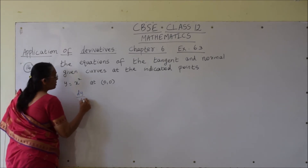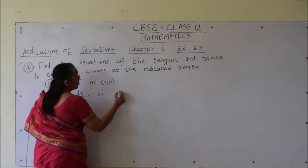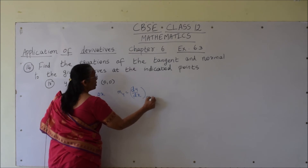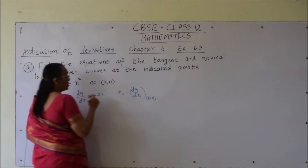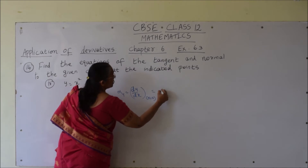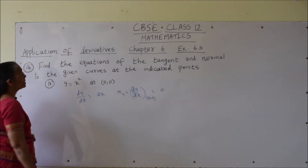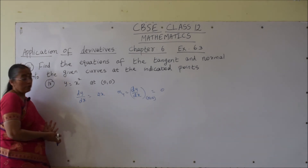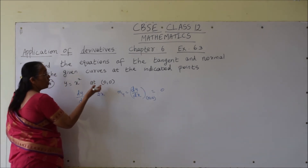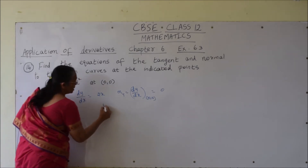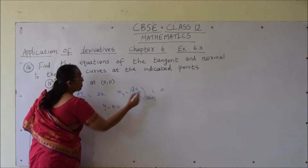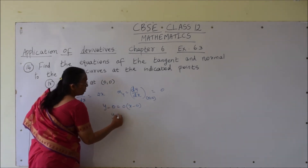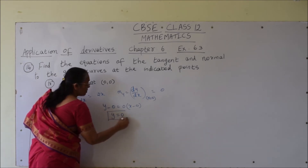Differentiating, dy by dx is 2x. Now the slope of tangent is dy by dx of the curve at the point (0, 0). Substituting 0 into x we get 0. So slope of the tangent is 0. The equation of tangent is y minus 0 equals 0 times x minus 0, which is nothing but y equals 0.